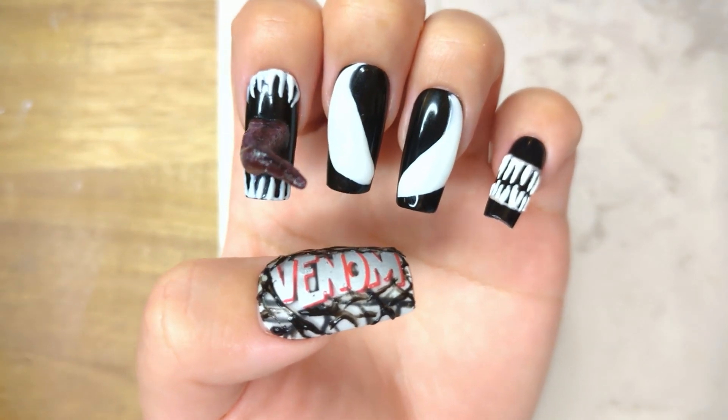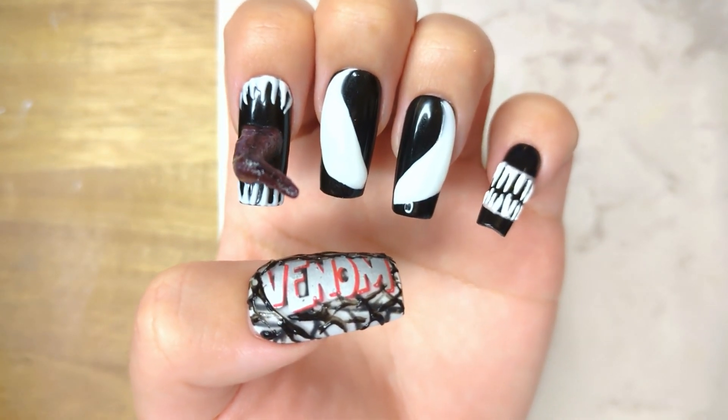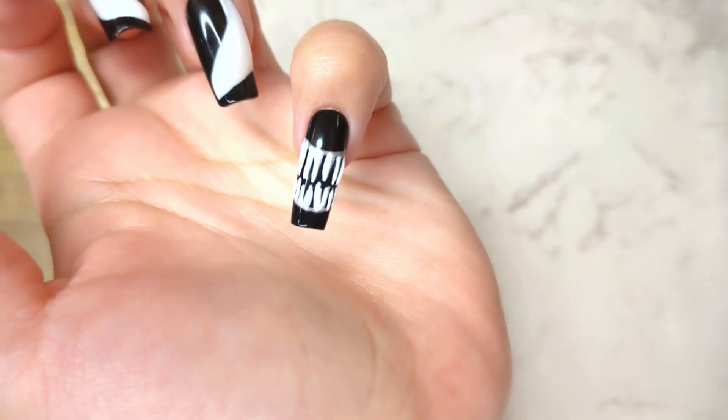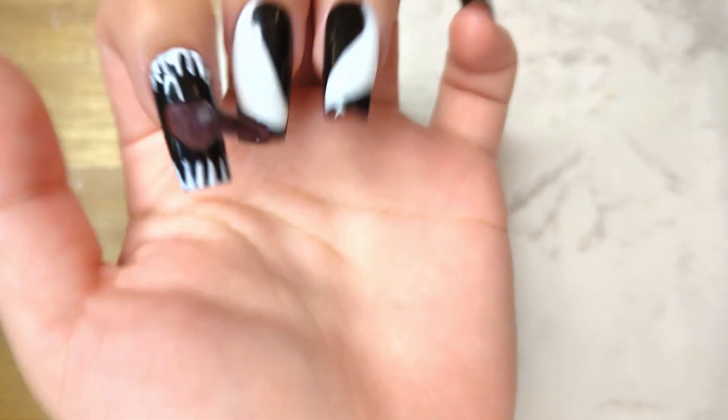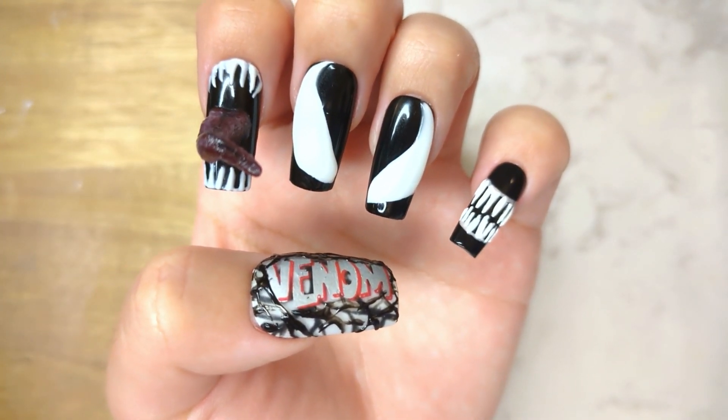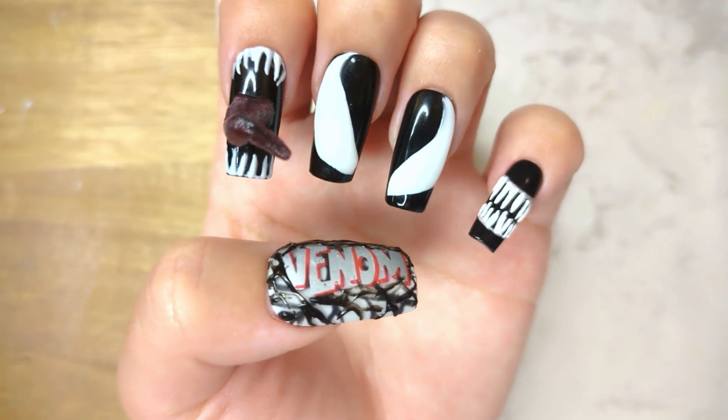Hope you guys like my review and Venom nails. This is the logo with Venom's black goo, this is Venom's toothy grin, these two are his eyes, and this one is, of course, his tongue. I had a lot of fun with this set. I get to use a lot of sculpting gel for the 3D effects, and I'm pretty proud of the outcome.